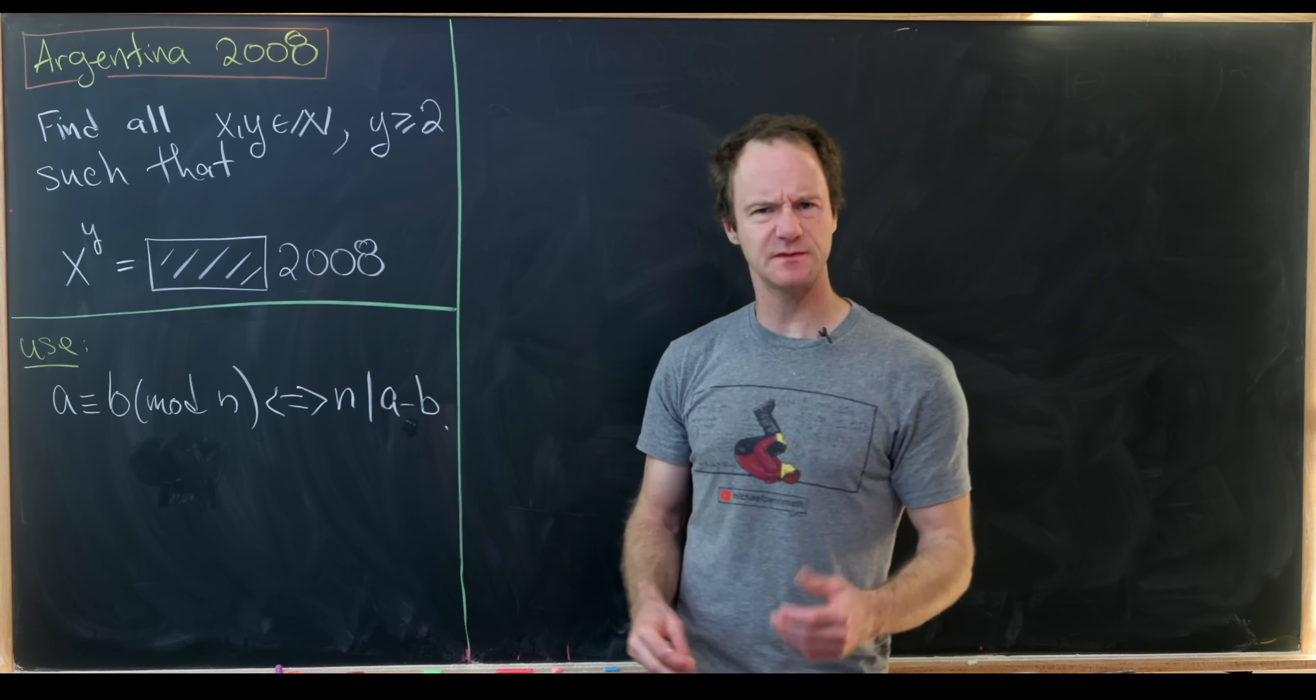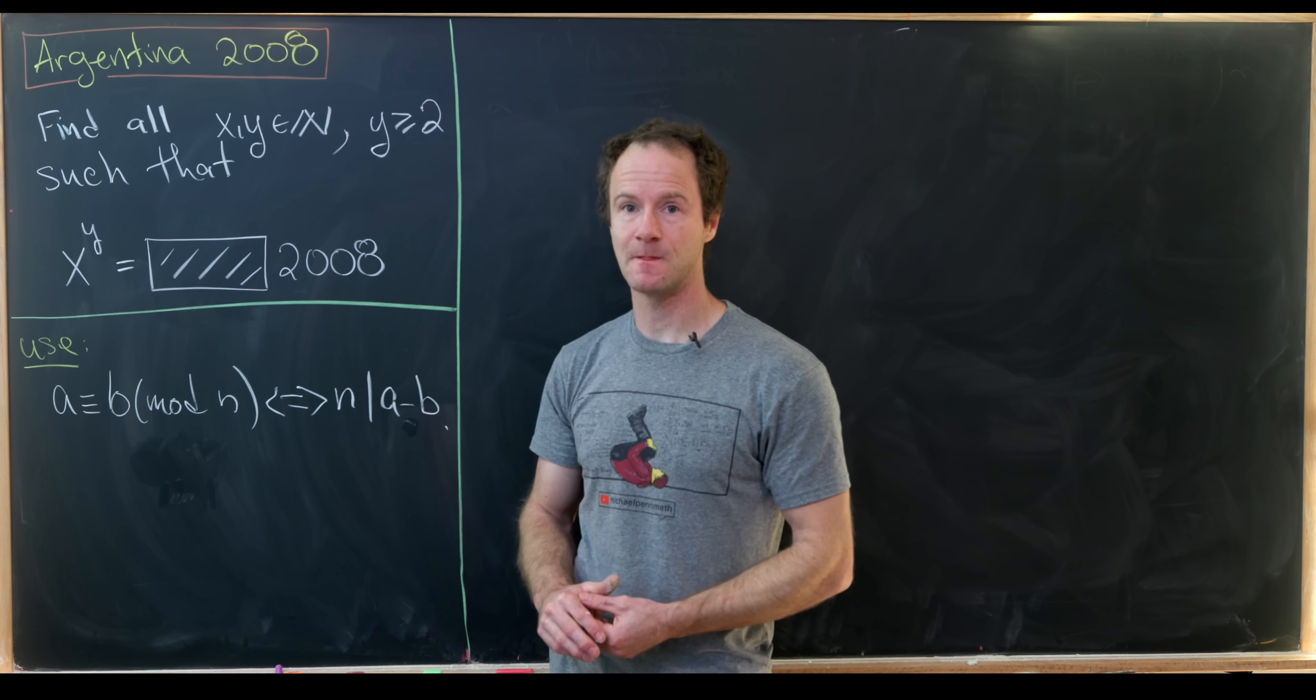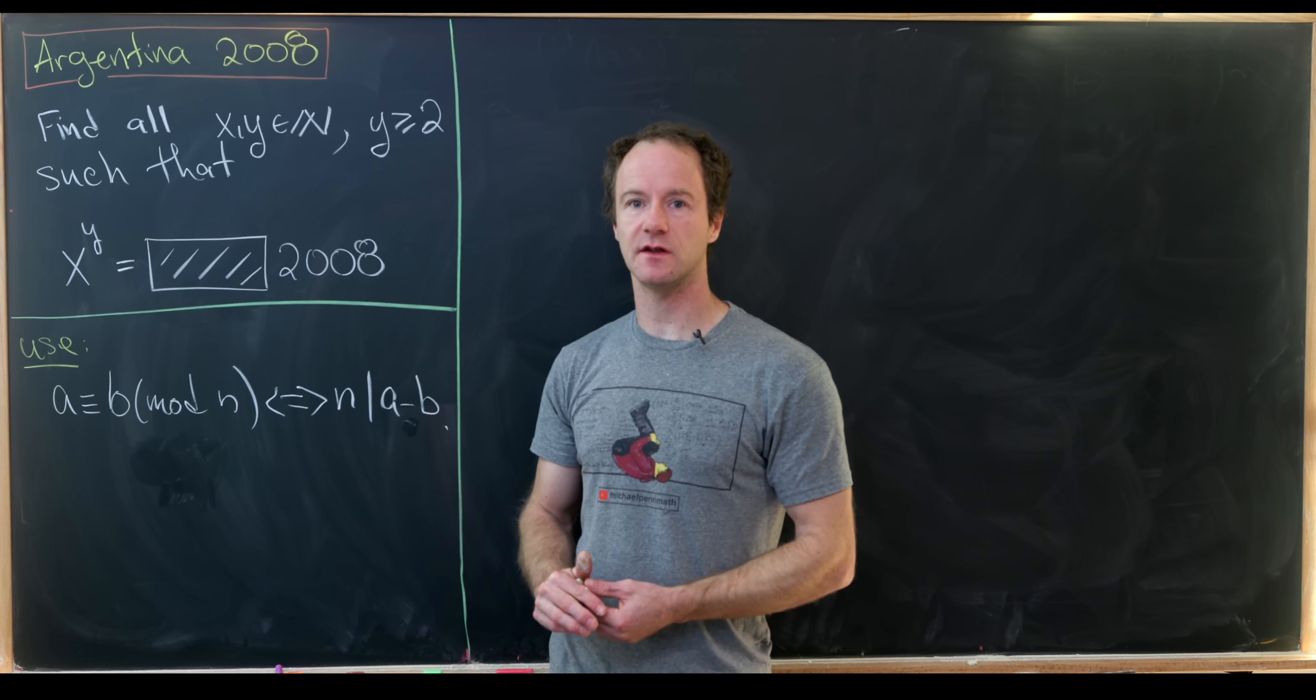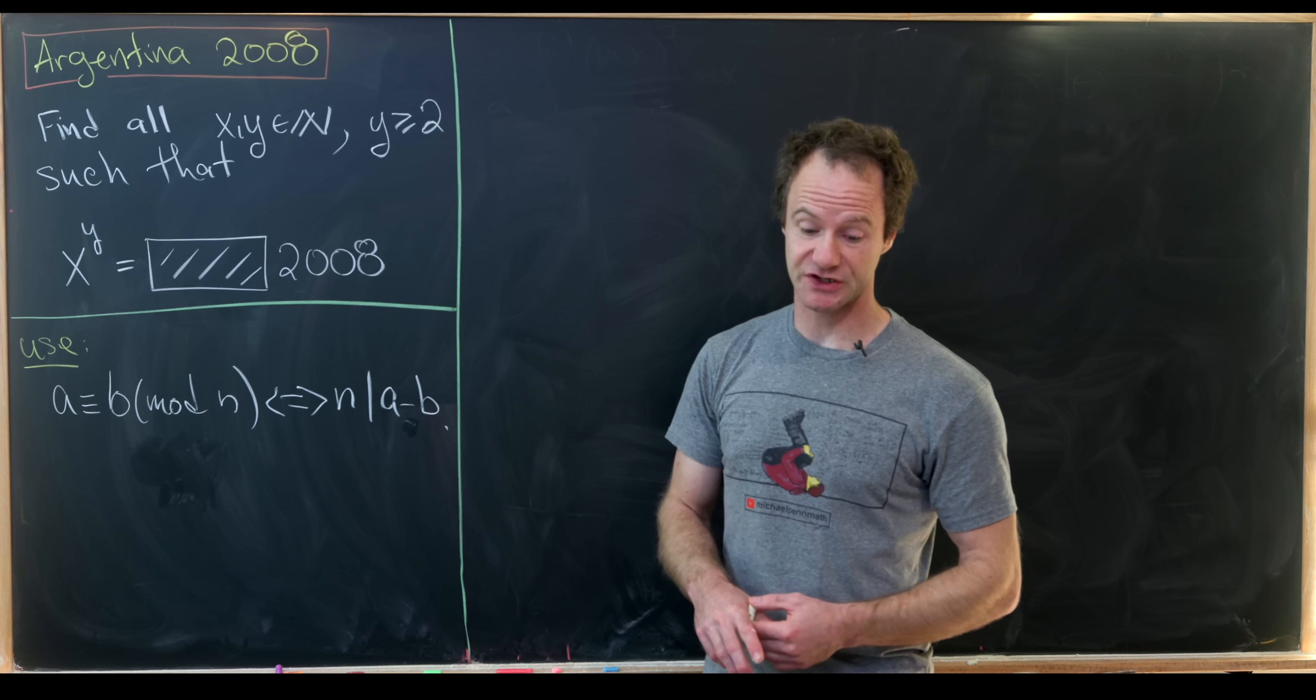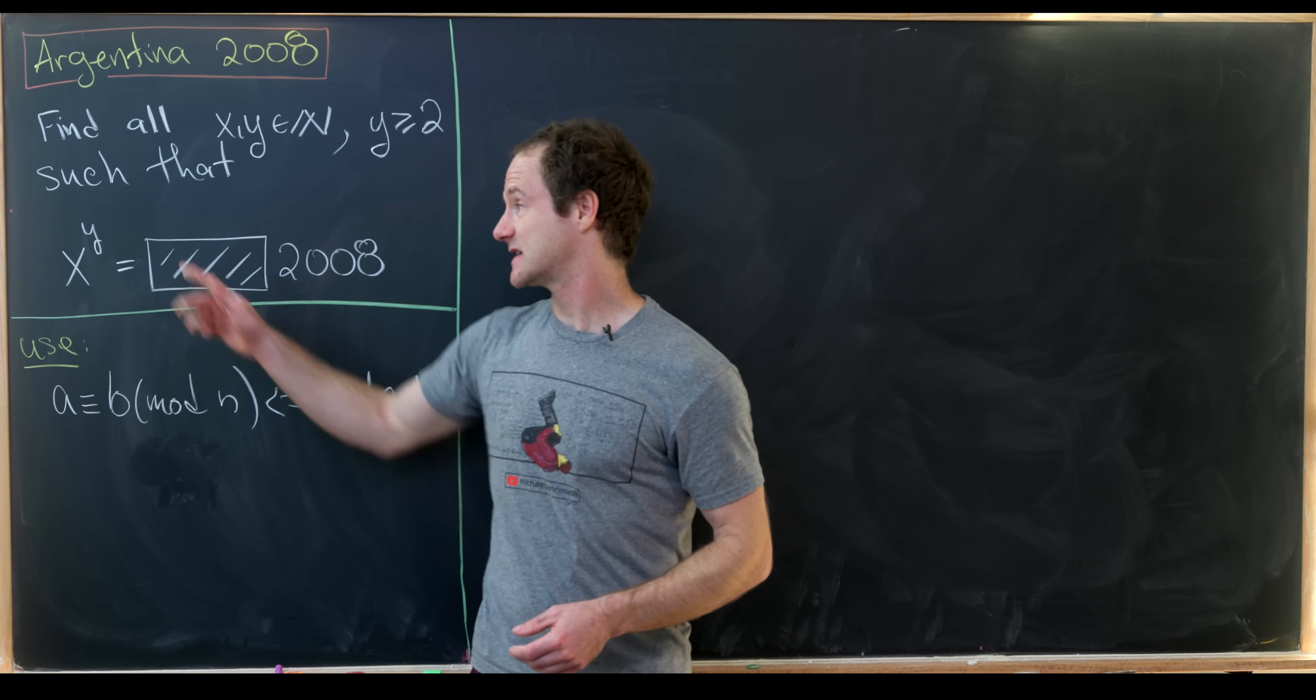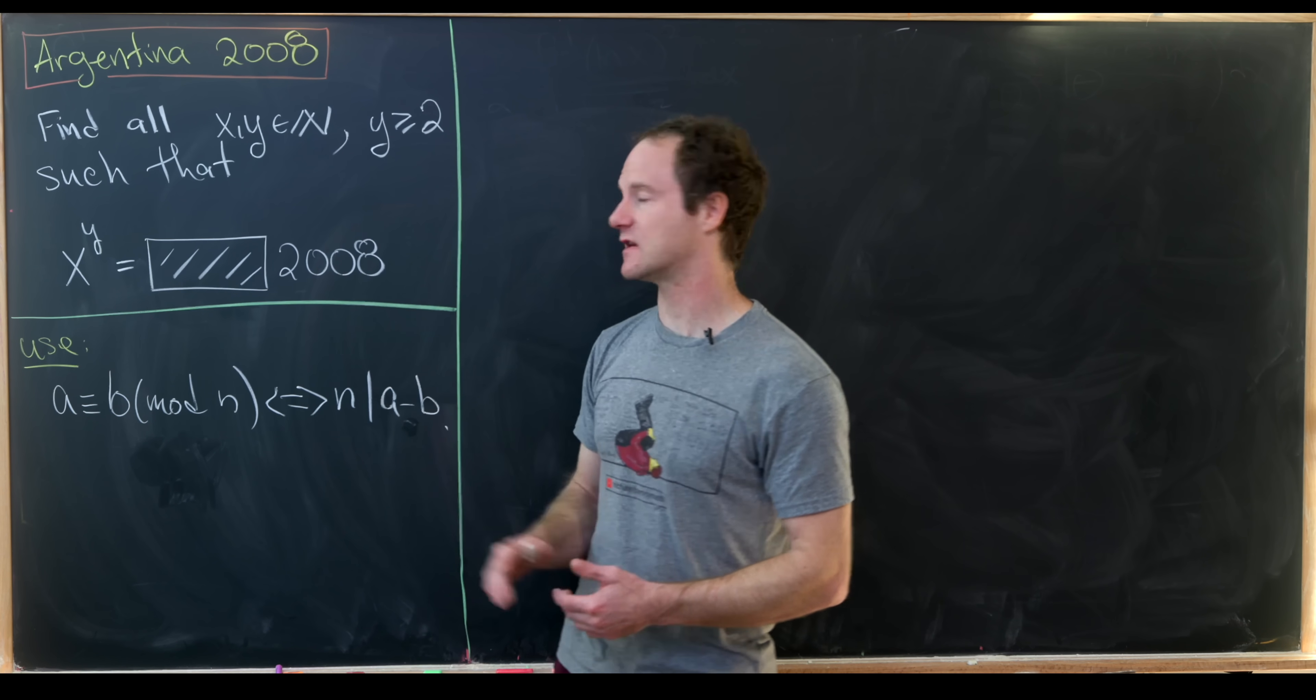Today I've got a nice number theory problem that comes from an Argentinian Math Olympiad from 2008. Our goal is to find all natural numbers x and y where y is greater than or equal to 2 such that x to the y is equal to some number that ends in 2008.